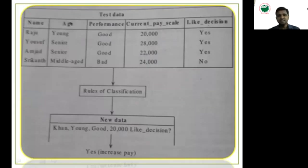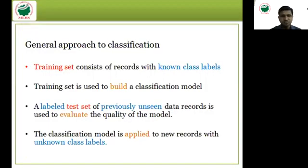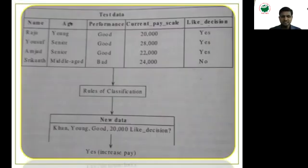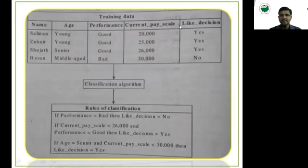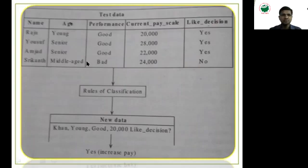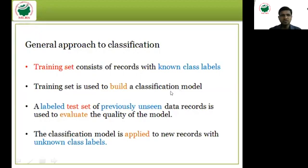This is how we can classify data. Now, the general approach to classification: the training set consists of records with known class labels — attributes like name, age, performance, current pay scale, and decision. There are four tuples in this training set. The training set is used to build a classification model. A labeled test set of previously unseen data records is then used to evaluate the quality of the model.